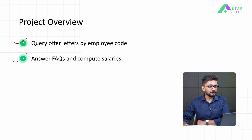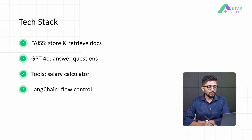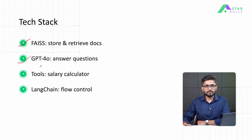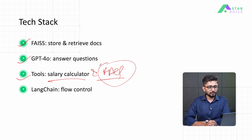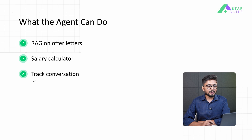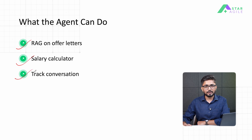Imagine having a chatbot that can take your offer letter and if you have any questions pertaining to your offer, it can read that offer letter and give you the answers from your specific offer. It will be able to answer some frequently asked questions and also compute the total salary. The tech stack we are going to use includes FAISS as a vector store for retrieving and embedding our documents.